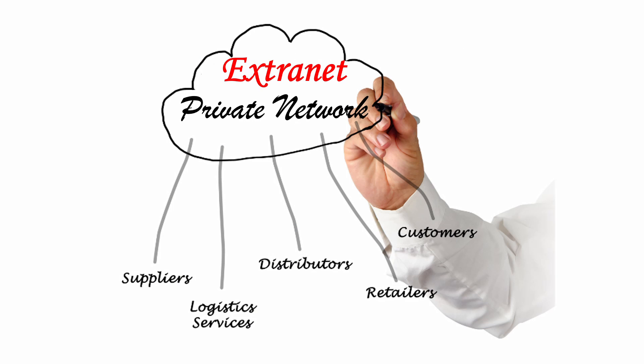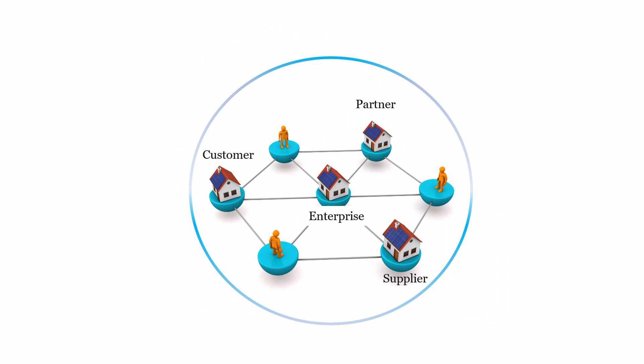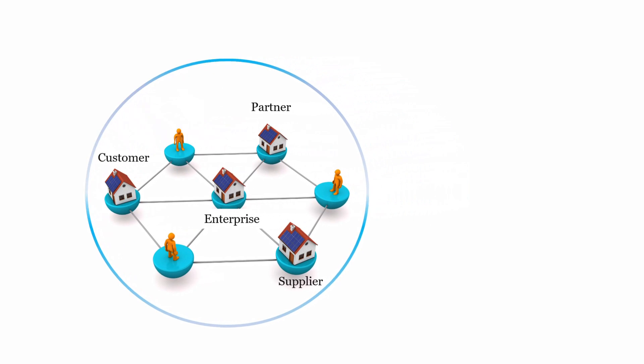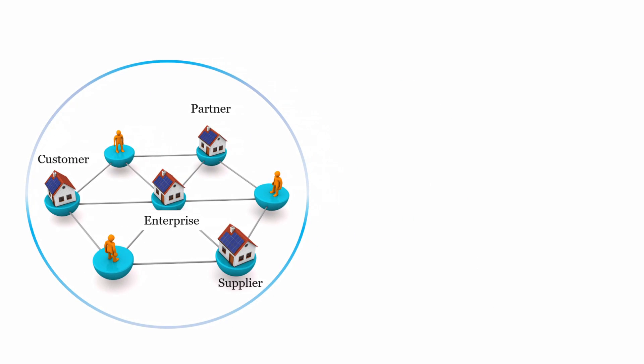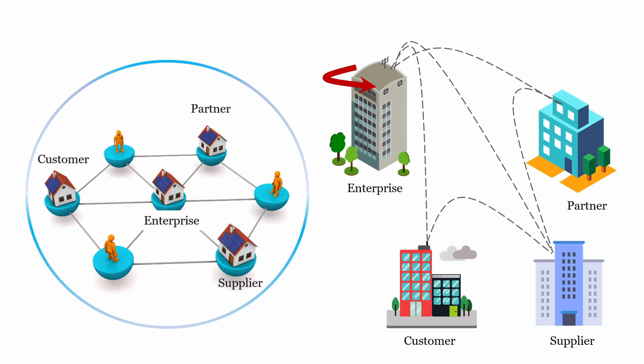The last network of our today's discussion is extranet. An extranet is a private network that an organization, company, or enterprise shares with a third party, such as suppliers, vendors, partners, customers, etc. Extranet provides secured and controlled access to business information or other operations. Extranet is derived from intranet. Intranet is only available for members of organizations only, whereas extranet is available to members within the organization and also to relevant members present outside the organization.